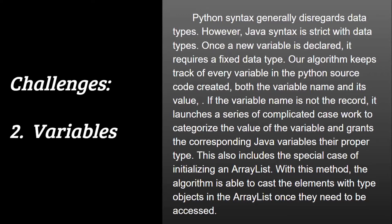Next, variables. Python syntax generally disregards data types. However, Java syntax is strict with data types — once a new variable is declared, it needs a required fixed data type. Our algorithm keeps track of every variable in the Python source code, both the variable name and its value. If a variable name is not yet recorded, it launches a casework process to categorize the value of the variable and assigns a corresponding Java variable the proper type. For example, if I want to store a number like 1 in a variable called 'a', the converter will change that to the Java equivalent — an integer 'a' initialized to the value of 1. This also covers the special case of initializing an ArrayList, allowing the algorithm to cast elements stored as objects to their actual data types when accessed, so the Java code does not lose any correctness.